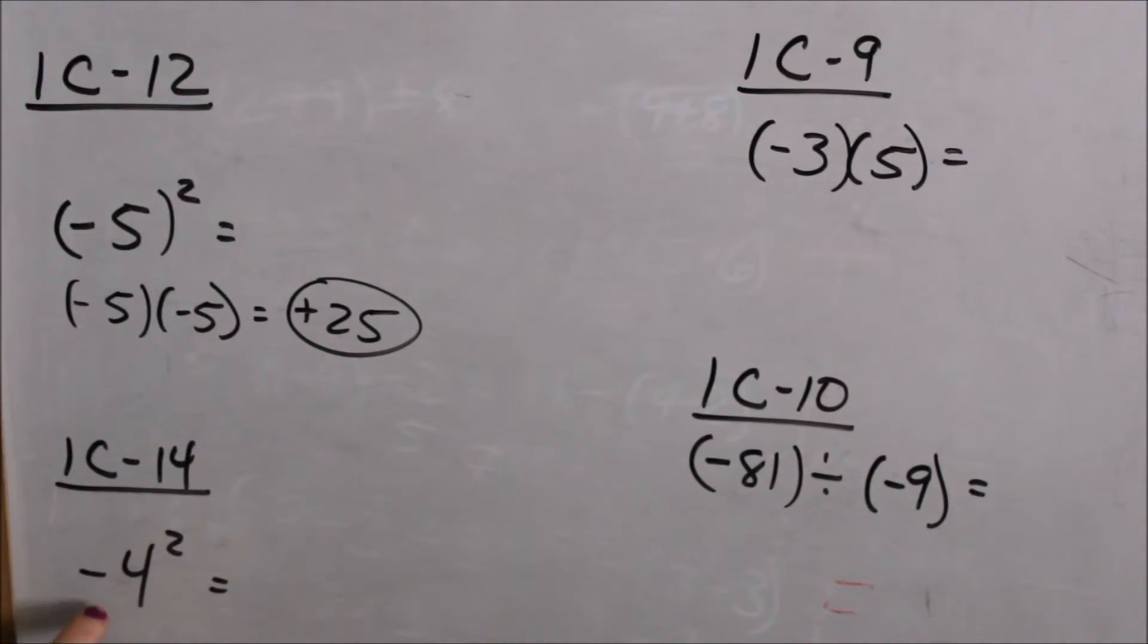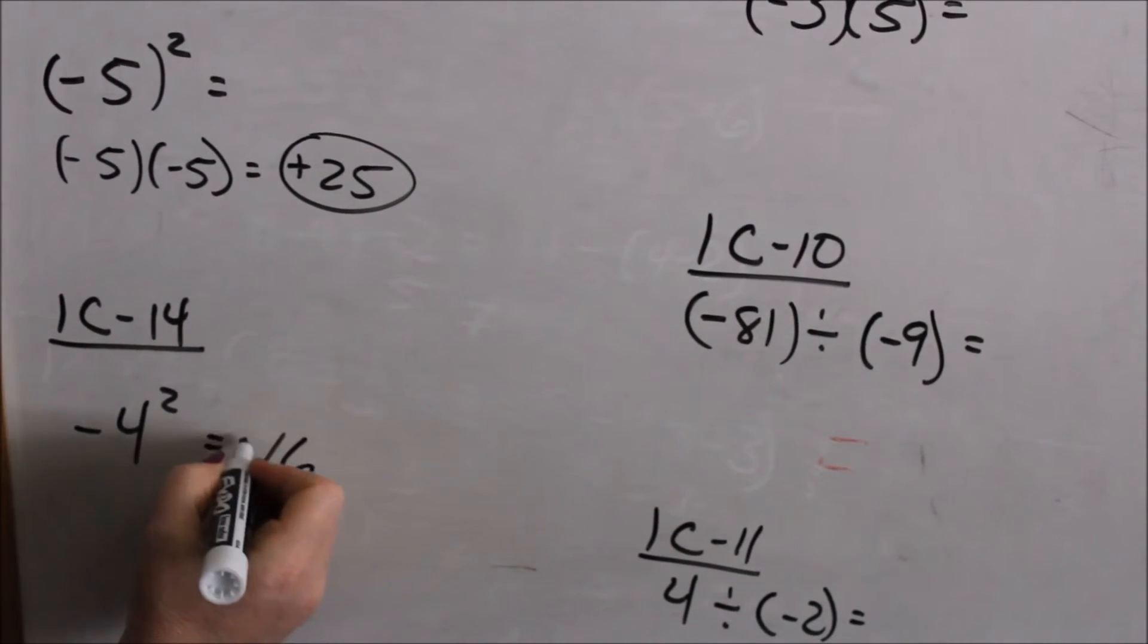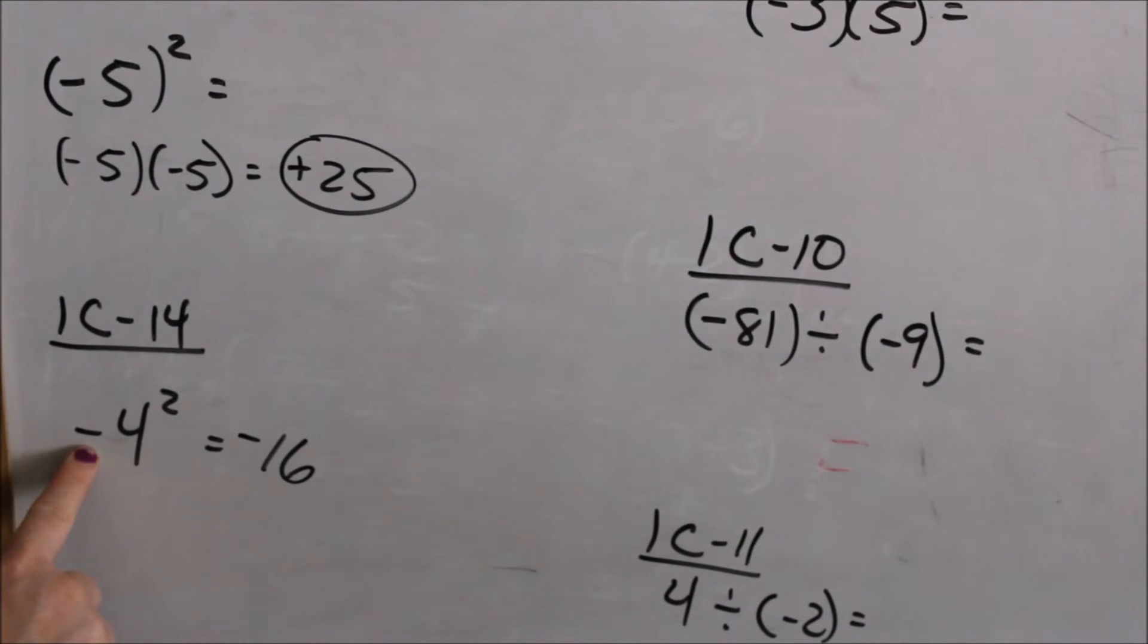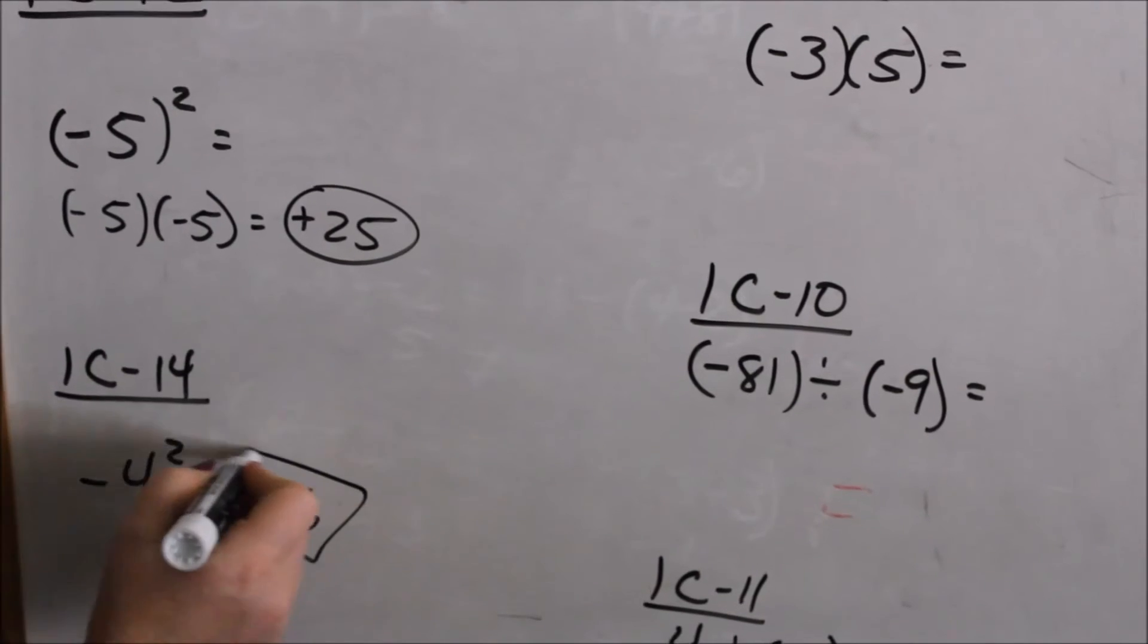At 1C14, you have a negative 4 squared with no parentheses. That means you do the exponent first, and the negative stays in front. So you do your 4 squared first, which is 16, and your negative stays in front. So when there is no parentheses, your negative stays in front.